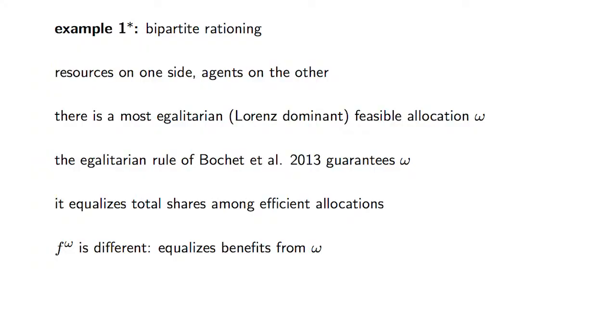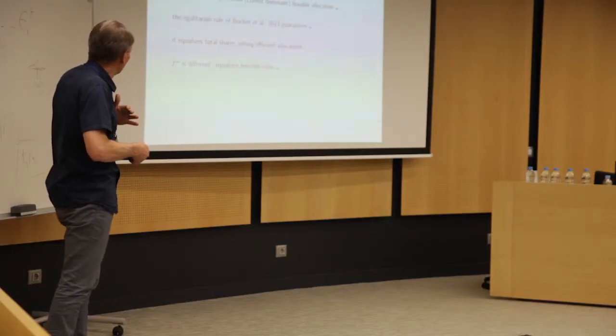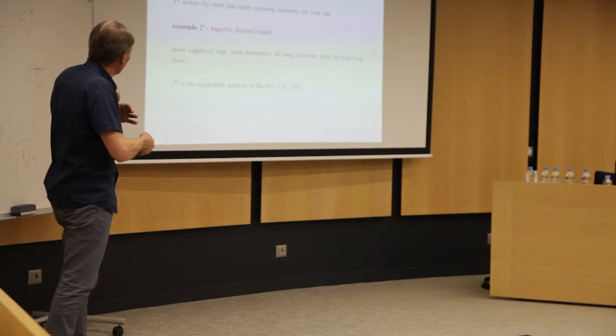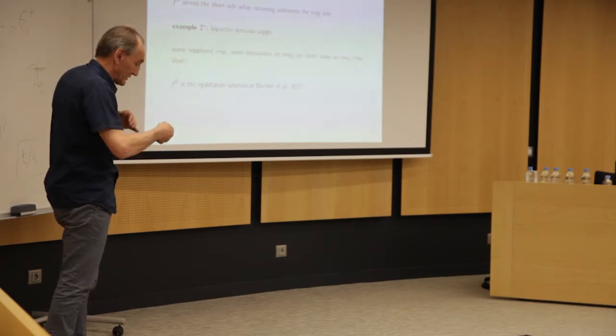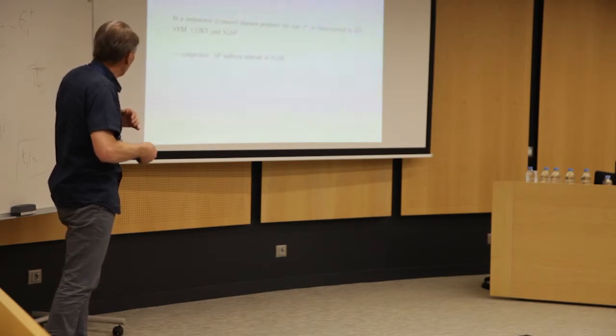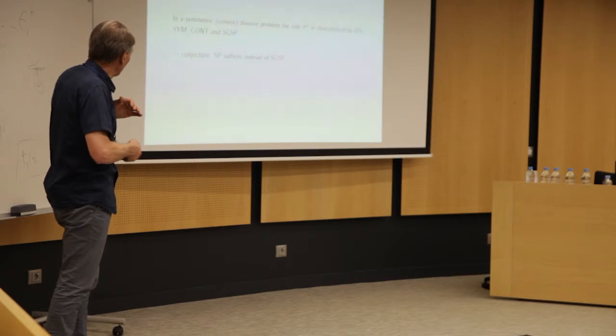So we start from one over n each and we say, we're going to count a benefit for you up or down depending on whether your peak is above or below. And we're going to leximin on that. It's just an alternative interpretation. Now, bipartite rationing is a more complicated model. I'm not going to go into it. Here again, there is a canonical egalitarian feasible allocation, but the rule that we discussed with Bosche and Il-Kilic, which is another rule with all of these strong properties is actually different from F_omega. So already there, you have multiplicity, but balancing equal demand and supply, it's similar things.